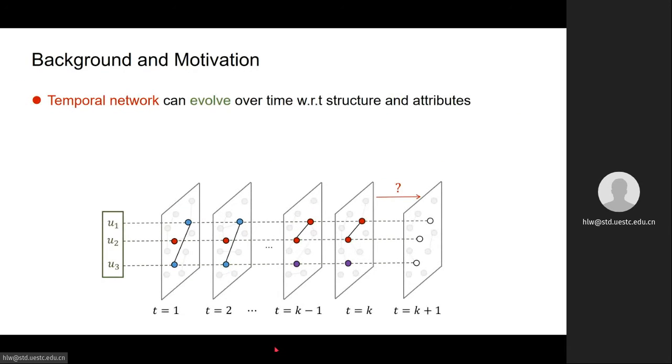Before introducing dynamic user behavior, let's first talk about temporal networks. Temporal networks are a series of network snapshots ranked by time where node attributes and network structure can both evolve over time.